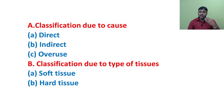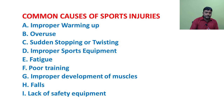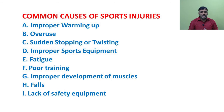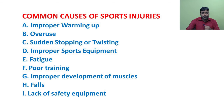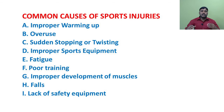Common causes of sports injuries include: improper warm-up, overuse, sudden stopping or twisting, improper sports equipment, fatigue, poor training, improper development of muscles, falls, and lack of safety equipment. Improper warm-up: warming up makes muscles more pliable; most stretching exercises are done during warm-up. Improper warm-up can lead to injury, as straining a muscle is often caused by engaging in activity without properly warming up. Overuse: repeatedly using muscles and overuse may cause sports injuries like tennis elbow in tennis players; stress fractures are another example.